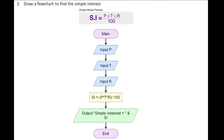Next, draw a flowchart to find the Simple Interest. Three input values are needed: Principal amount, Time, and Rate of interest. Then calculate Simple Interest: SI equals P into T into R divided by 100. Finally, print the SI value using the output box and end.